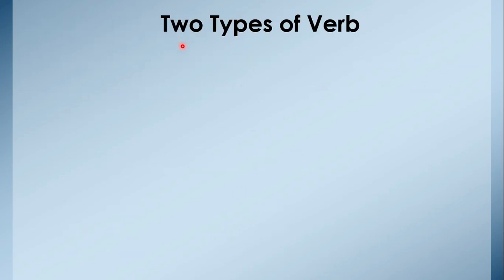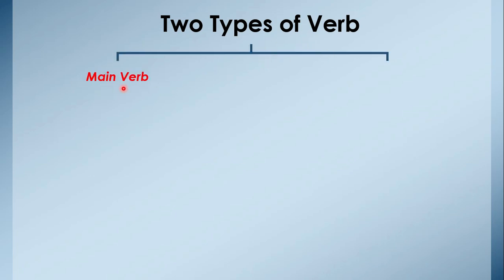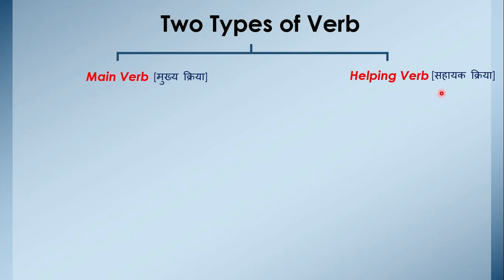There are two types of verb. Verb dho tarahki hootie hai. Ek hootie hai main verb, jisse hum mukhya kriya keheti hai, aur dousari hootie hai helping verb, jisse hum sahaayak kriya keheti hai. Main verb woh verb hootie hai jho express kerti hai nature of the action — ki karriya koon sa hai. Jaise kheelna, pina, gaana, sona — yhe sab karriya hai, yhe main verb hai, mukhya kriya hai, karriya ka roop hai.